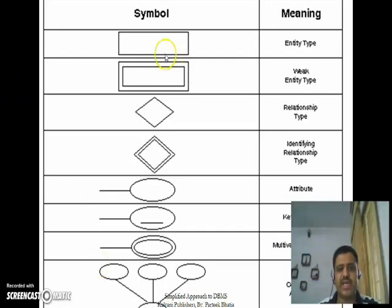The first common symbol is the rectangle which is used to represent the entity set. The Oval Symbol is for Attribute. If the Oval is Underlined, we consider it as a Key Attribute. For Multi Value Attributes like Hobbies or Phone Number, we have Double Oval Sign.